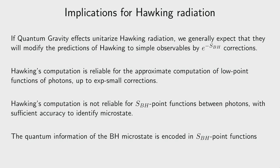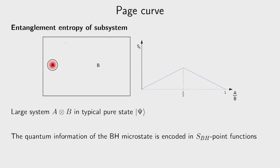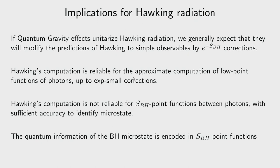This is true for any quantum system: for a spin chain in a pure state, to identify the microstate you need correlation functions involving a number of spin operators comparable to the total number of spins. Two-point functions alone are never sufficient to reconstruct the microstate — and we expect the same for black holes.